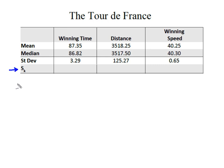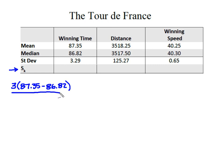For winning time, we're going to take three times the mean of 87.35, minus the median of 86.88, and divide that by the standard deviation of 3.29. That gives us a Pearson's index of 0.49 for winning time.